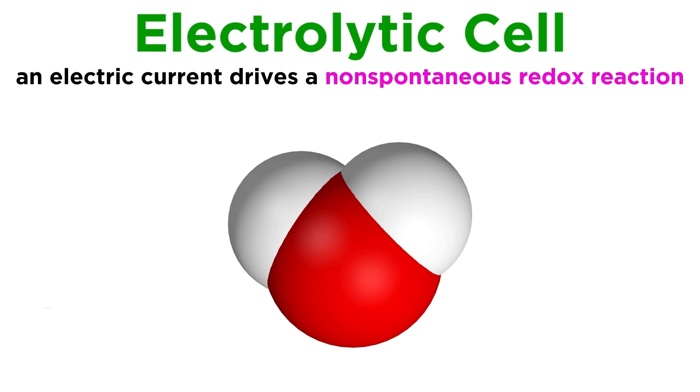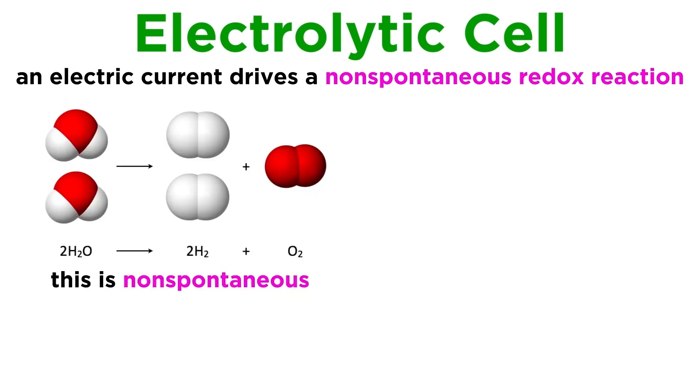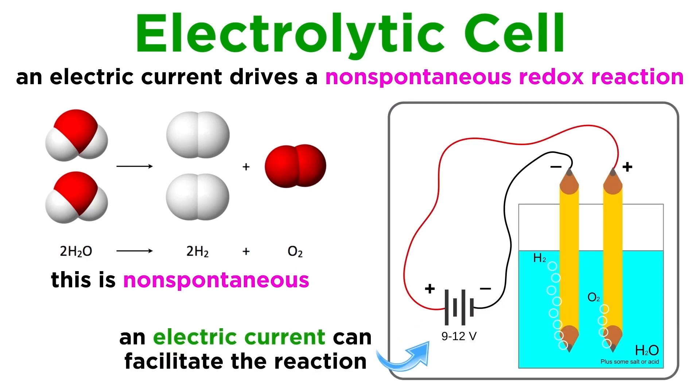Let's look at water to see an example of electrolysis. Water is a stable molecule. It does not spontaneously undergo a redox reaction to become hydrogen gas and oxygen gas. But if we put some electrodes in water to form an electrolytic cell, electrons from the current that is generated can facilitate this chemistry, and water molecules will indeed split up into hydrogen and oxygen molecules.